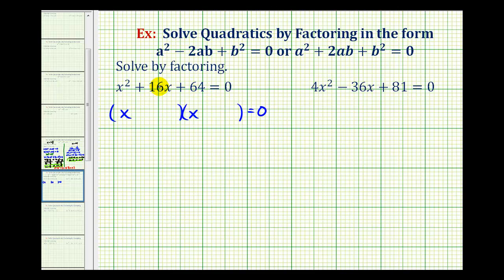Well, the factors of 64 that add to 16 just happens to be 8 and 8, because 8 × 8 = 64 and 8 + 8 = 16. So that means both of our binomial factors will be x + 8.